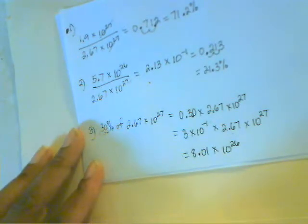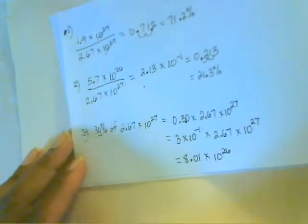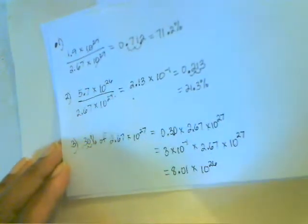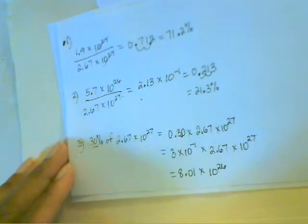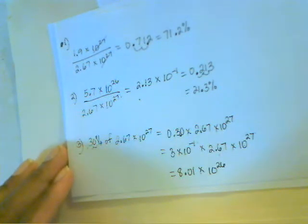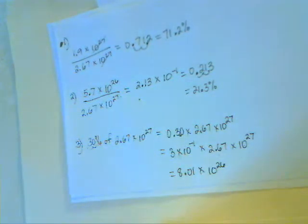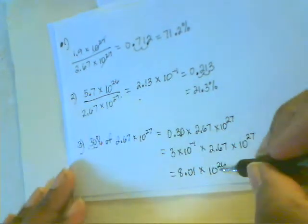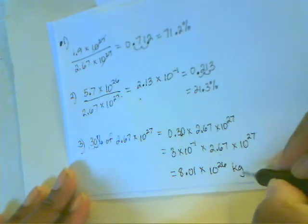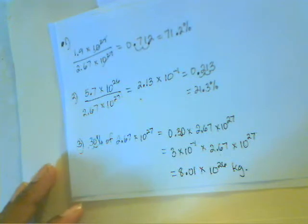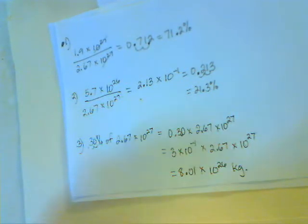So the final answer is 8.01 times 10 to the 26th. That represents 30% of the total mass of the solar system. So Saturn, Neptune, and Uranus make up 8.01 times 10 to the 26th kilograms. This should assist you with writing assignment number three.